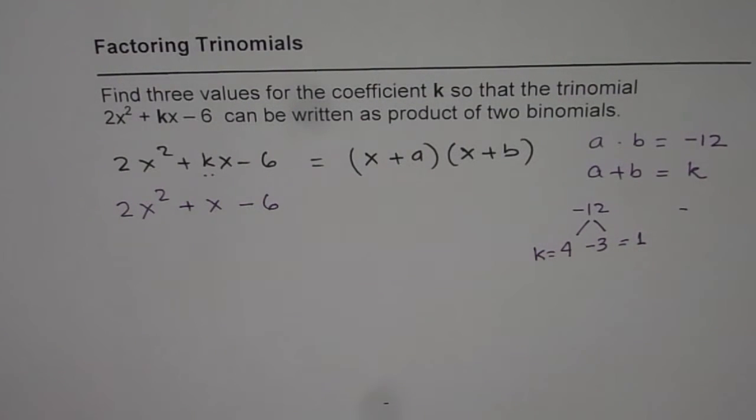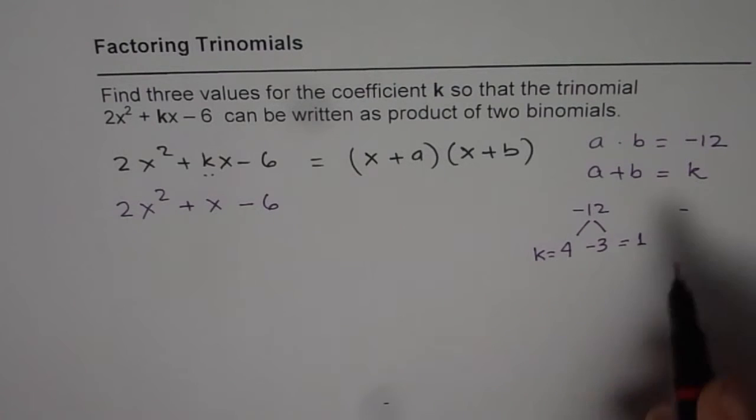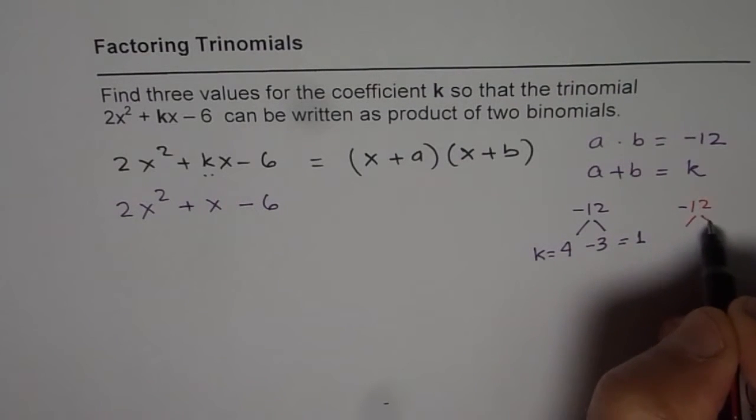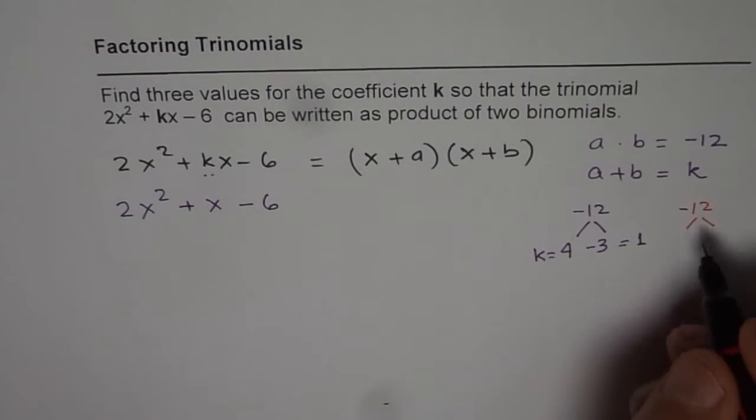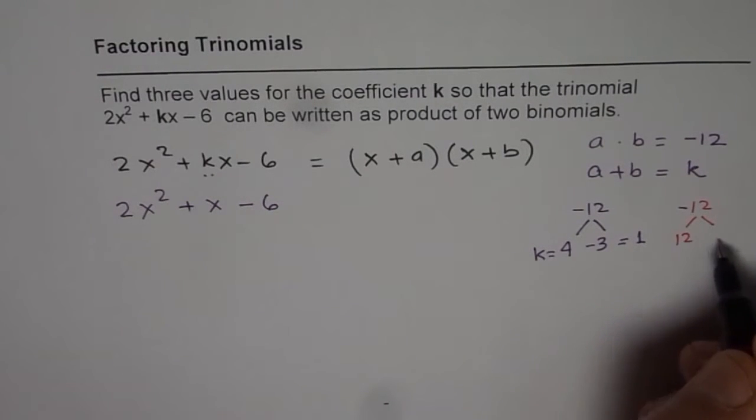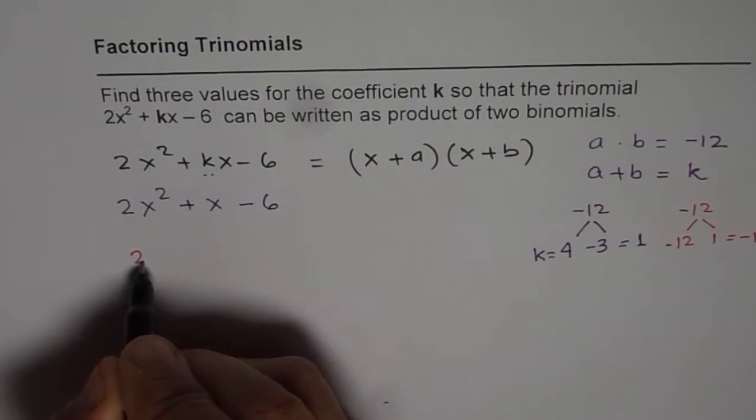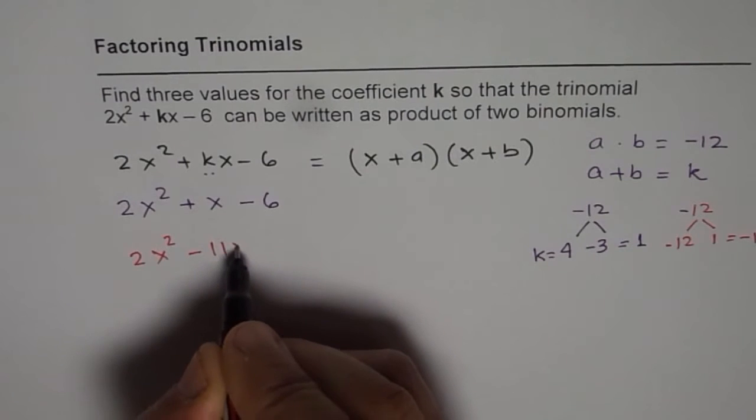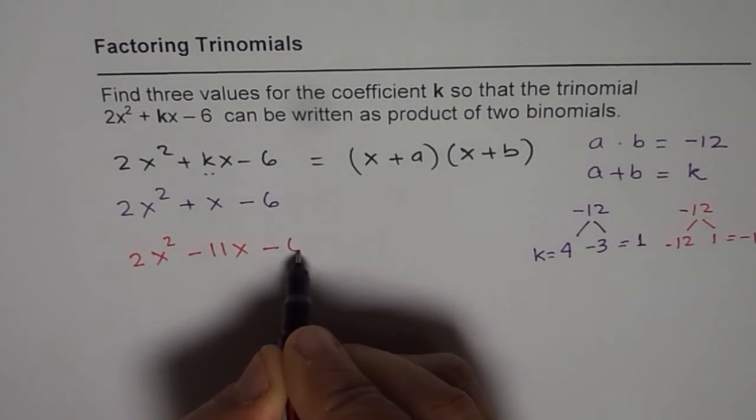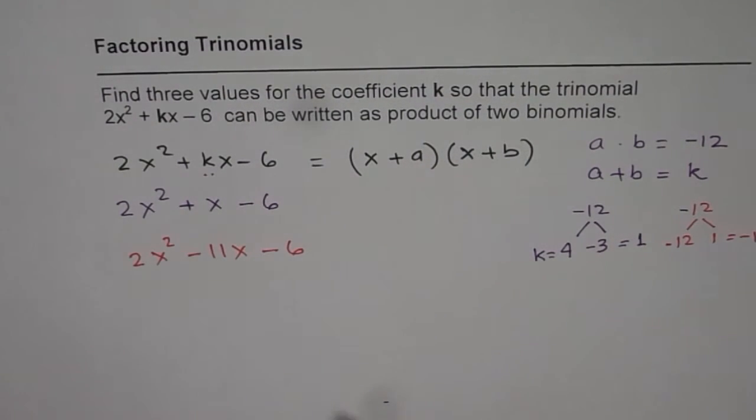The other combinations could be, let me use a different ink, -12. We could use 6 and 2 itself, but let me use 12 and 1 this time. So let us take this time 12 as negative. So if you add them up, you get -11. So we could write another form as 2x² - 11x - 6. This can be factored. So that is another way of writing the same thing.